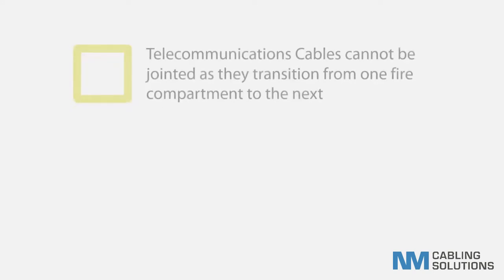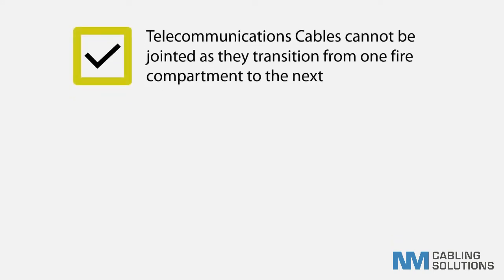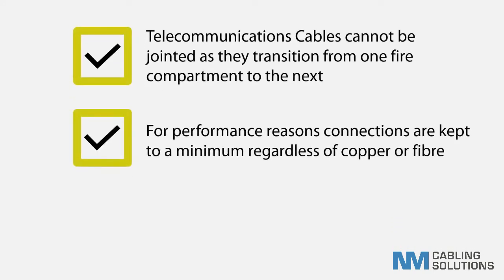Once more, for further clarity, unlike electrical cables, with telecommunications cables connections or joints must be kept to a minimum as each one will introduce an unwelcome signal loss. Therefore telecommunications cables must be of the same Euro class as they transition between fire compartments. Also consider what the evacuation route or space means — it is effectively any space within a building that a human can occupy.